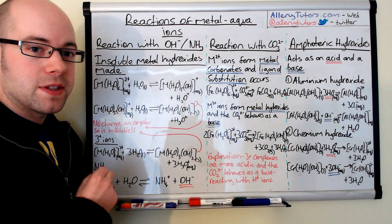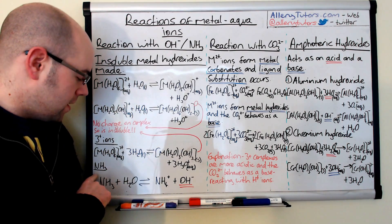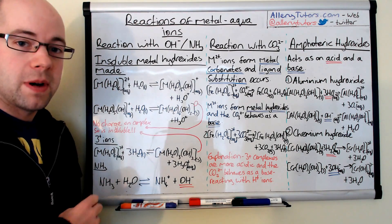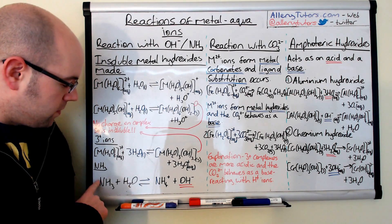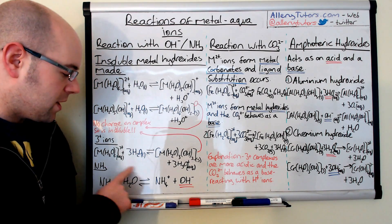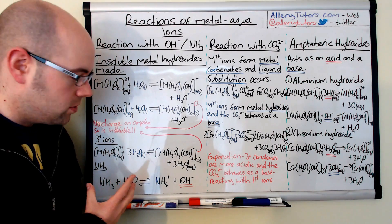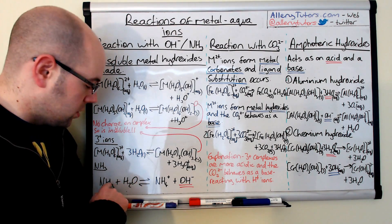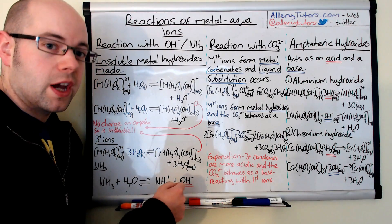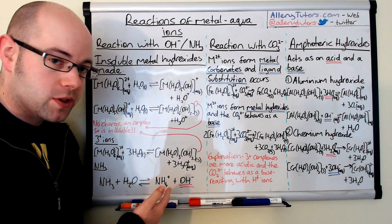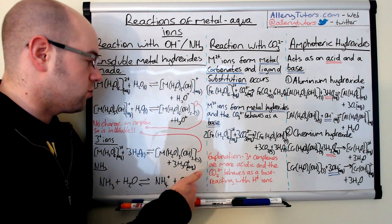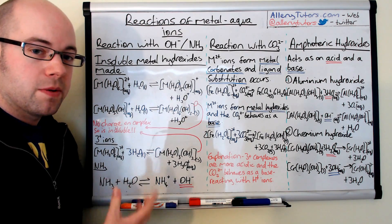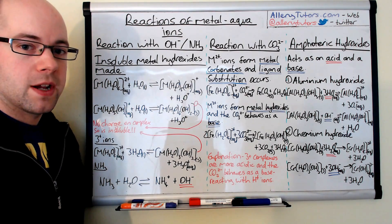Ammonia behaves in the same way. Unlike sodium hydroxide, ammonia doesn't carry hydroxide ions directly. Instead, when dissolved in solution the ammonia reacts with water to form ammonium ions and hydroxide ions. Because ammonia produces hydroxide ions when it reacts with water, those hydroxide ions then have exactly the same effect as described above — that is why ammonia works in the same way.